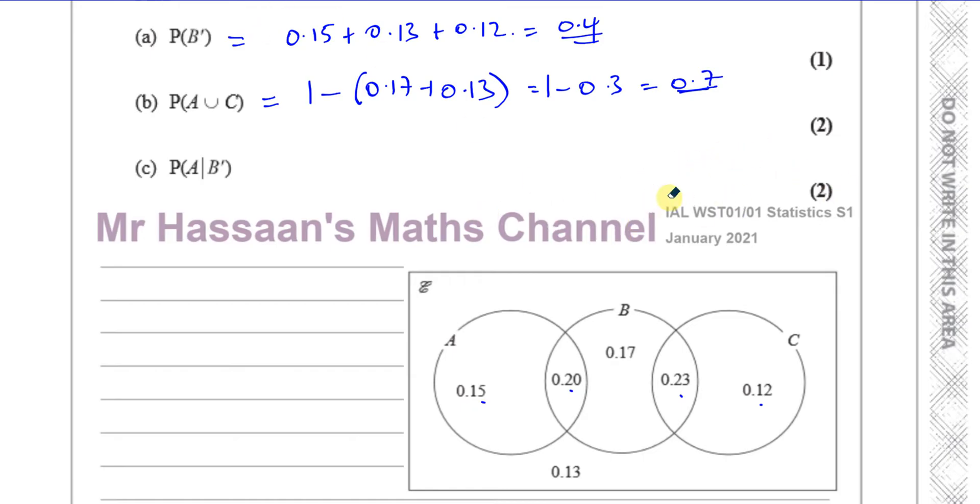Then it says the probability of A slash B complement. Now this slash thing means given. What it means is the probability of A given B complement. That means we're only looking now at the things that are outside of B, nothing else. Only looking at the things that are outside of B. So basically what we're doing is we're finding the probability, our sample set is just B complement. Whatever comes next after the slash, that's our sample set. So I'm only looking at the things that are outside of B. So I'm just going to highlight the things which are outside of B. The things which are outside of B are 0.15, 0.12, and 0.13.